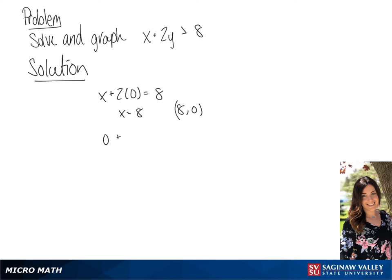Now we're going to substitute 0 for x, so 2y equals 8, y equals 4, and our y-intercept is 0, 4. We're going to use these points to graph.